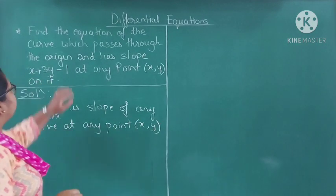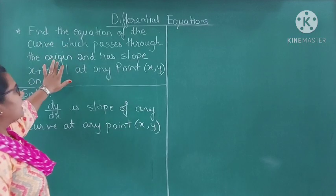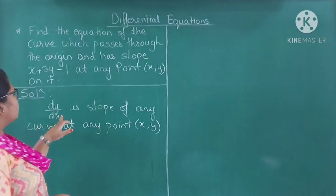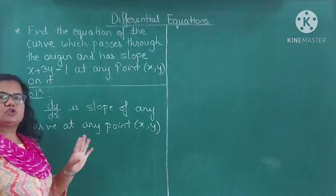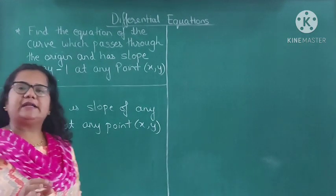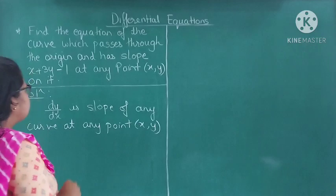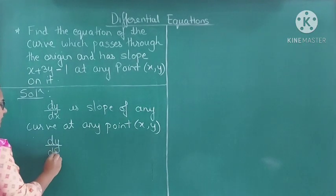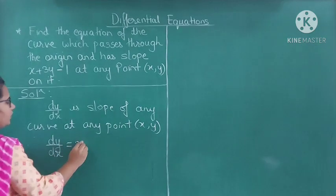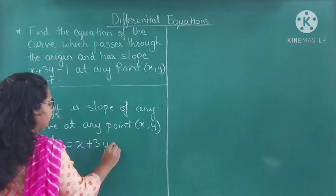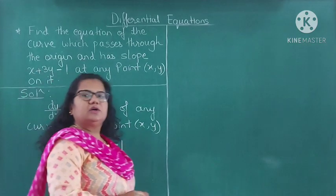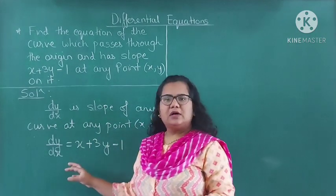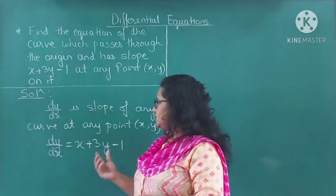To find the equation of the curve which passes through the origin and whose slope is x plus 3y minus 1, the slope dy/dx at any point (x, y) is given. So therefore, dy/dx is equal to x plus 3y minus 1. Now we will try to convert this equation to the linear differential equation form.